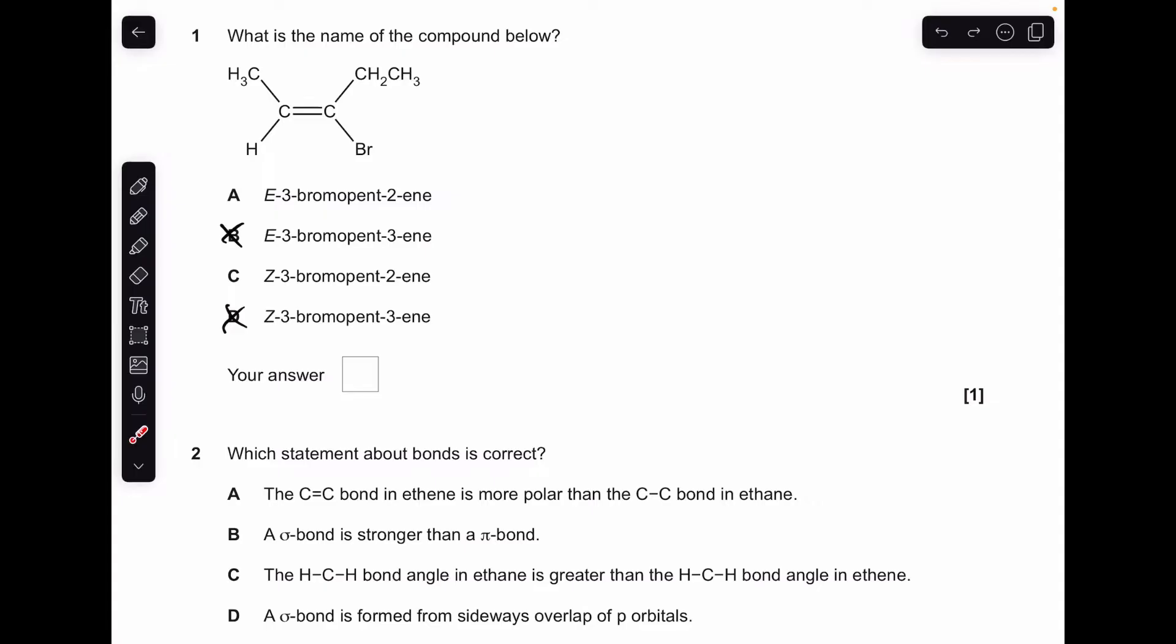The next thing we need to do is determine whether it's the E or the Z isomer. We look at the atoms directly bonded to the carbon of the double bond, and we determine priority by atomic number. Higher atomic number means priority. Carbon has got a higher atomic number than hydrogen, so that's the priority group on the left-hand carbon of the double bond.